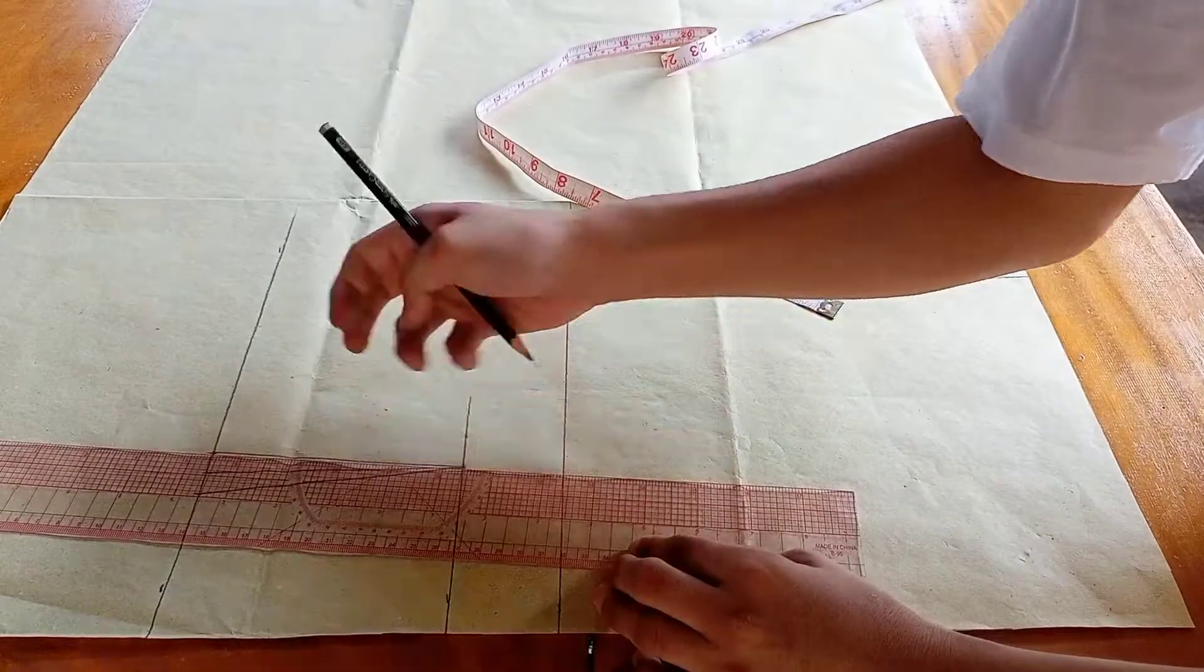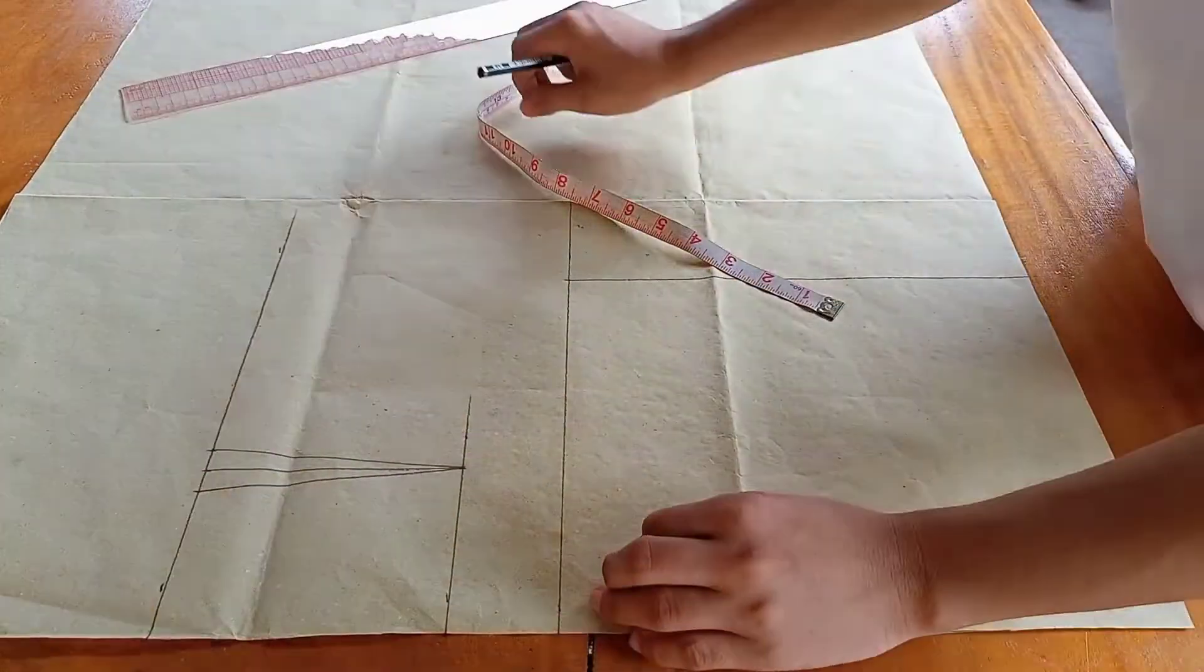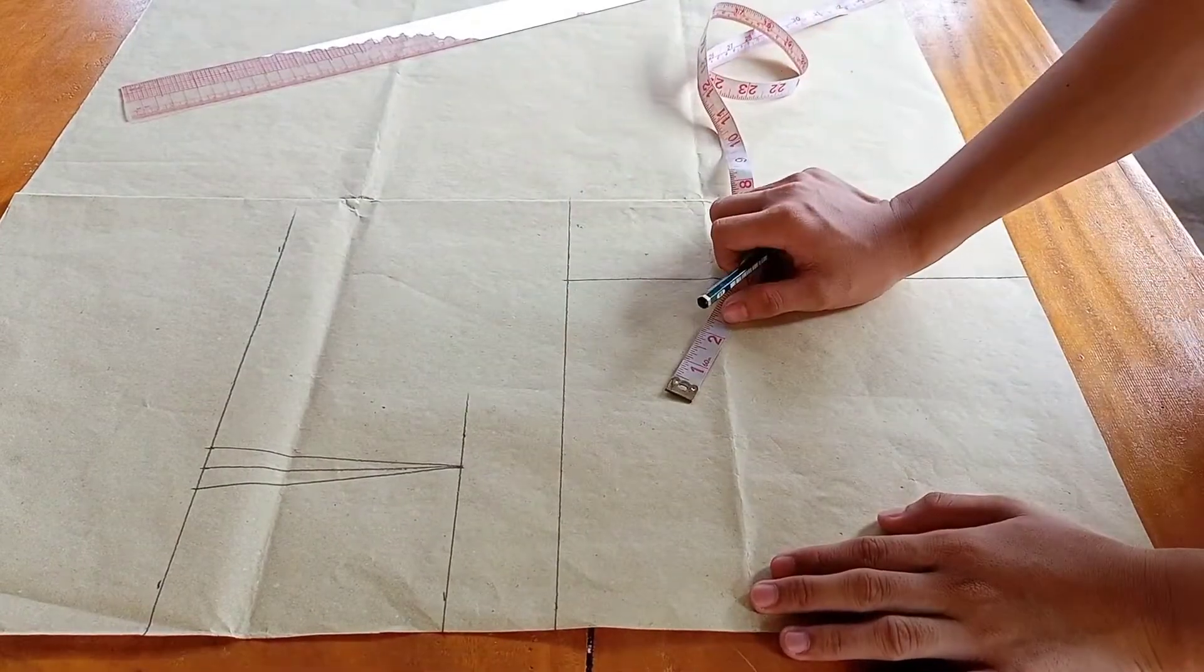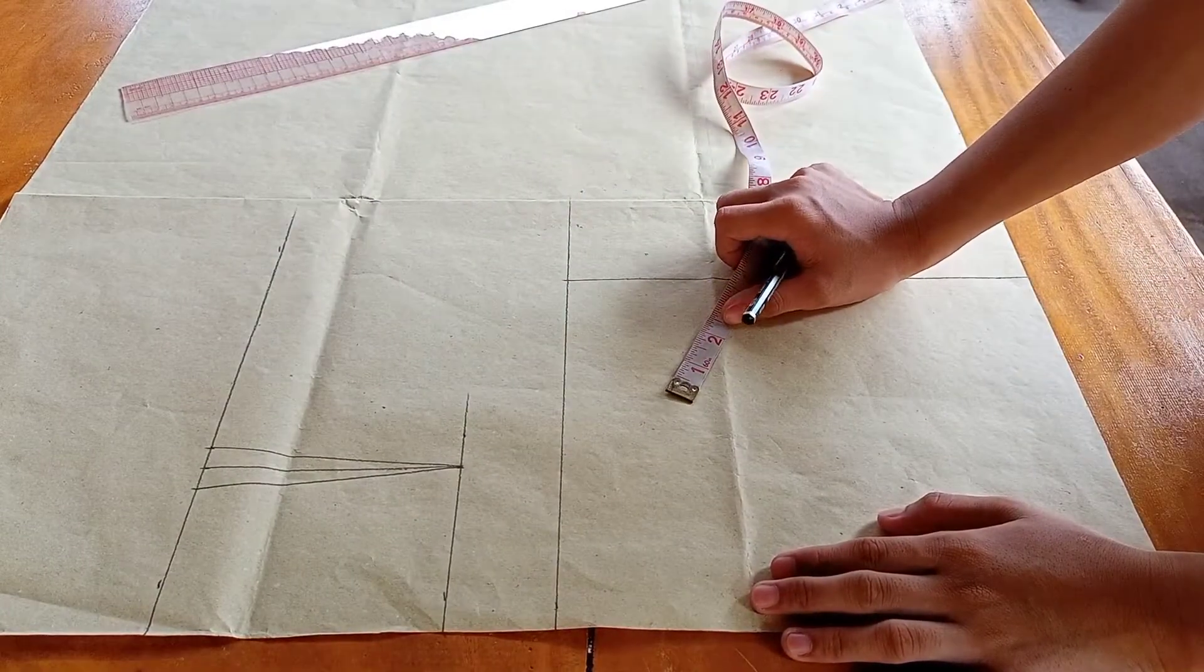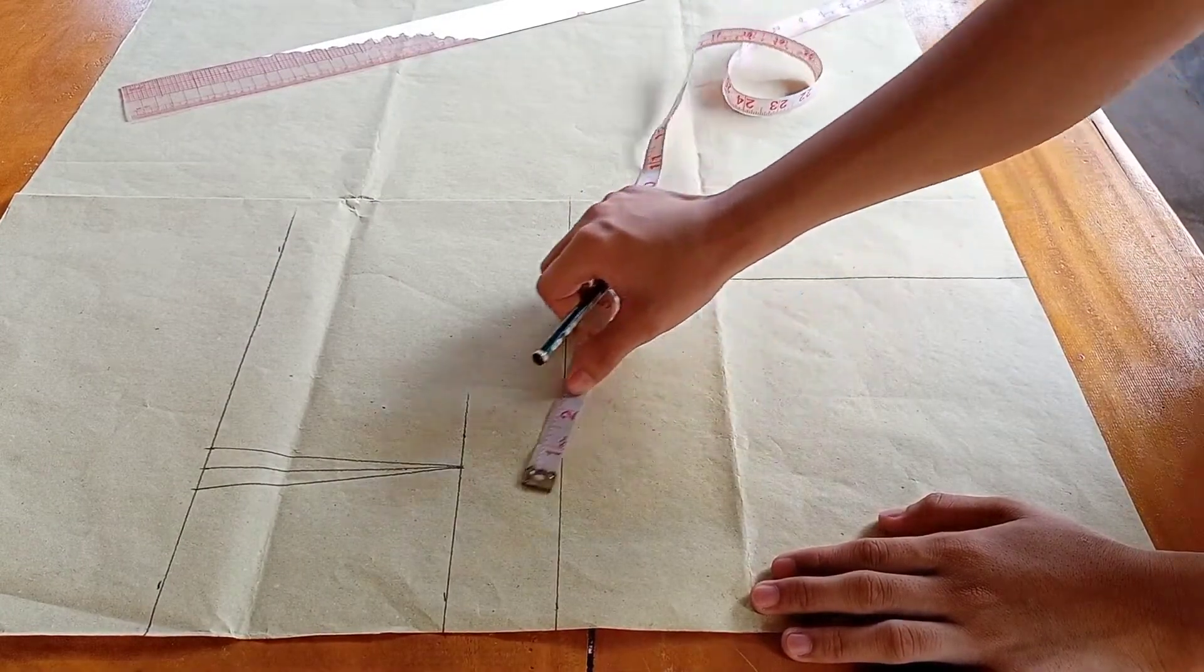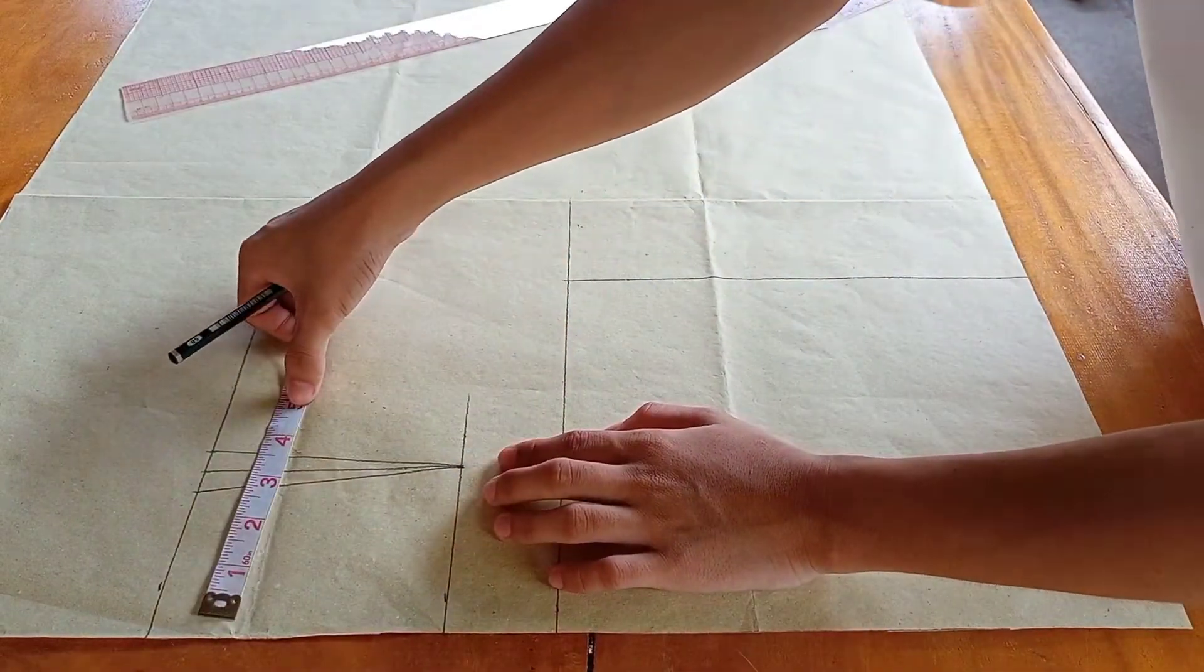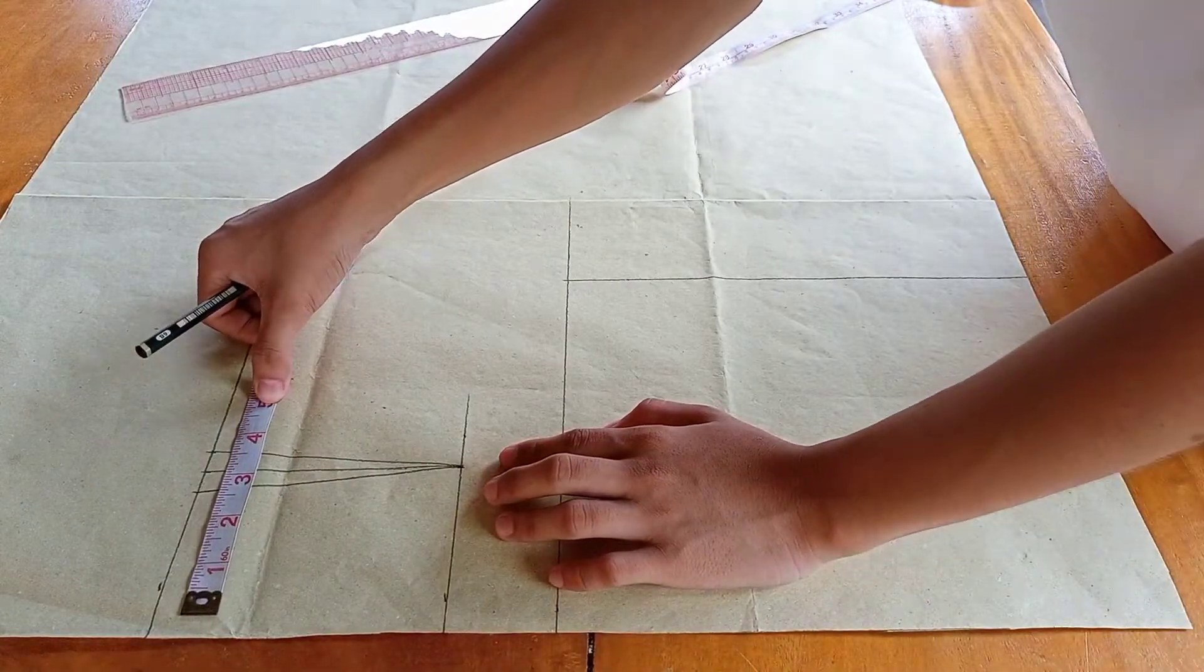Remember, we are going to make 3 darts, so this is the first dart. Now, the measurement of your waist divided by 4. 28 inches divided by 4 equals 7 inches.